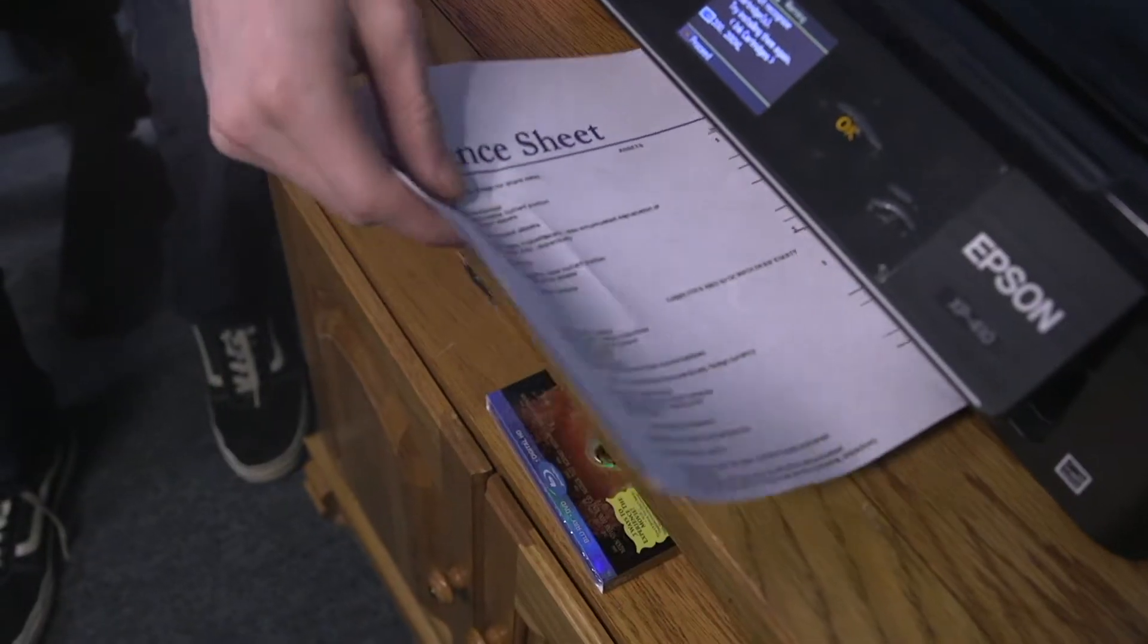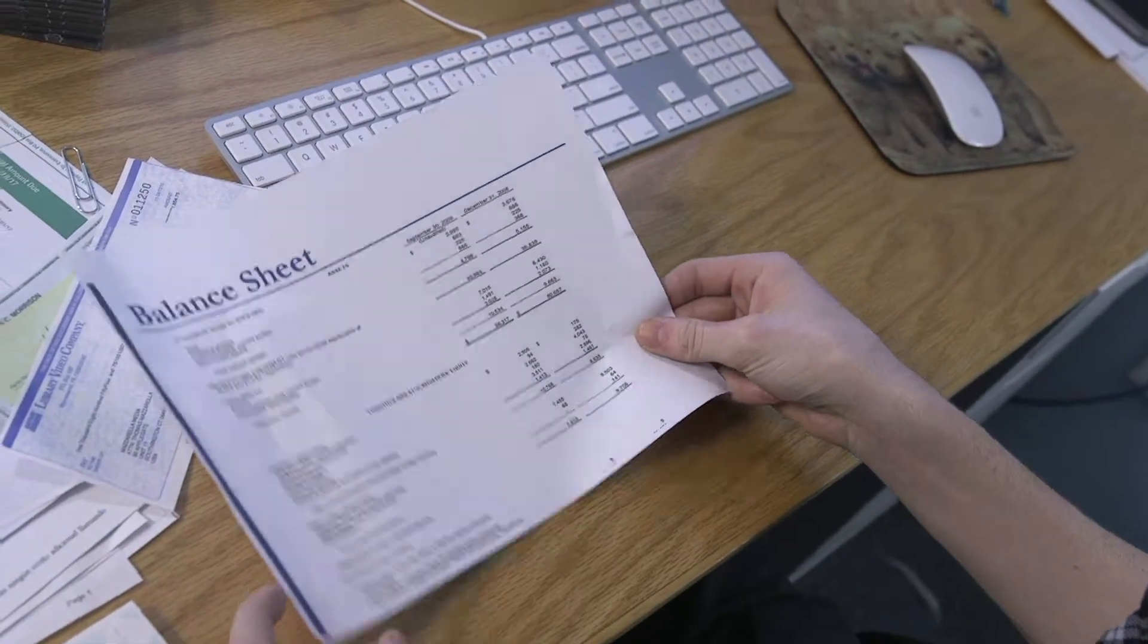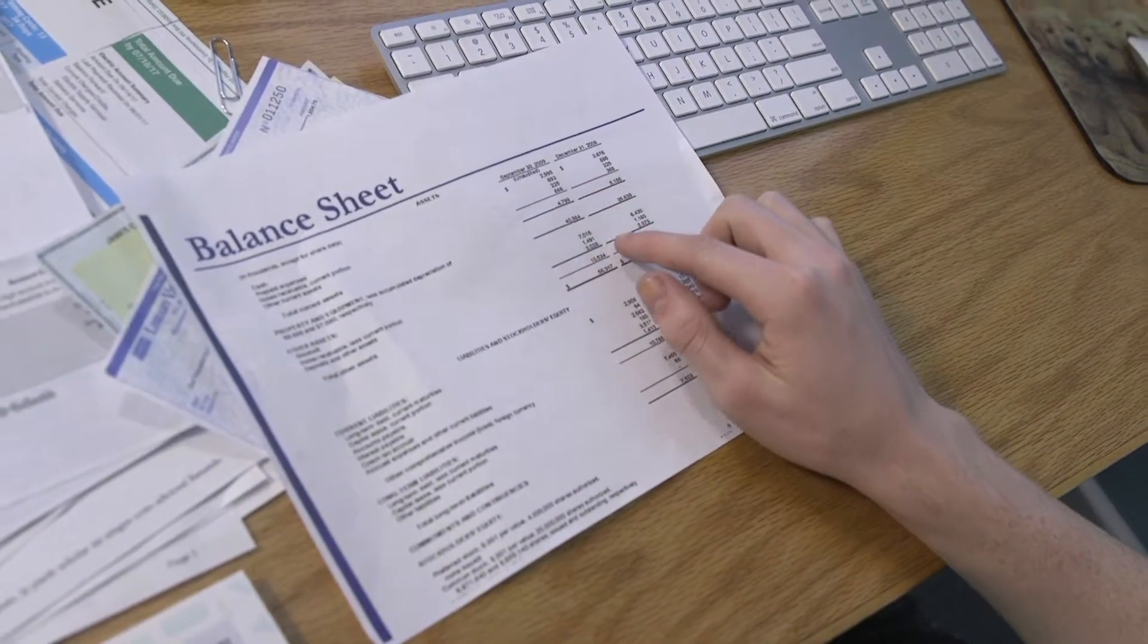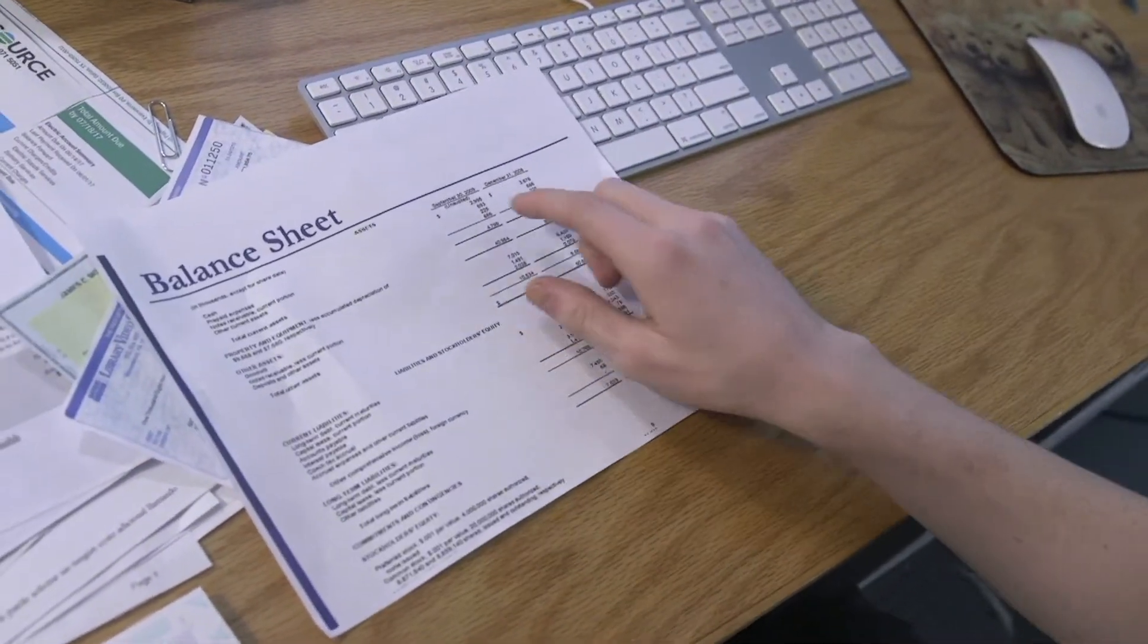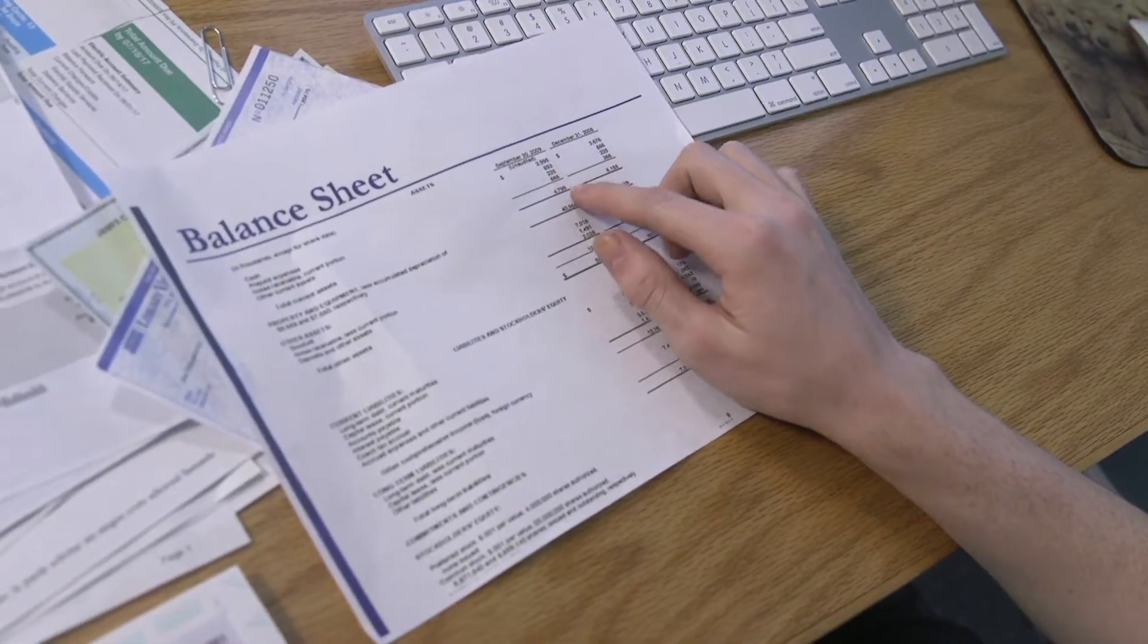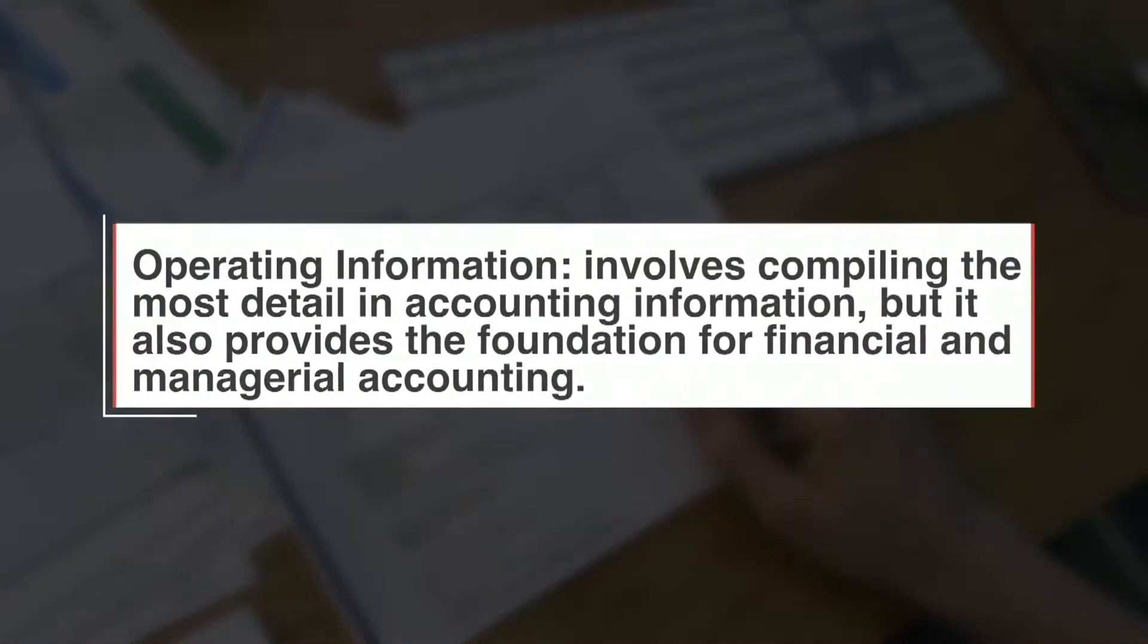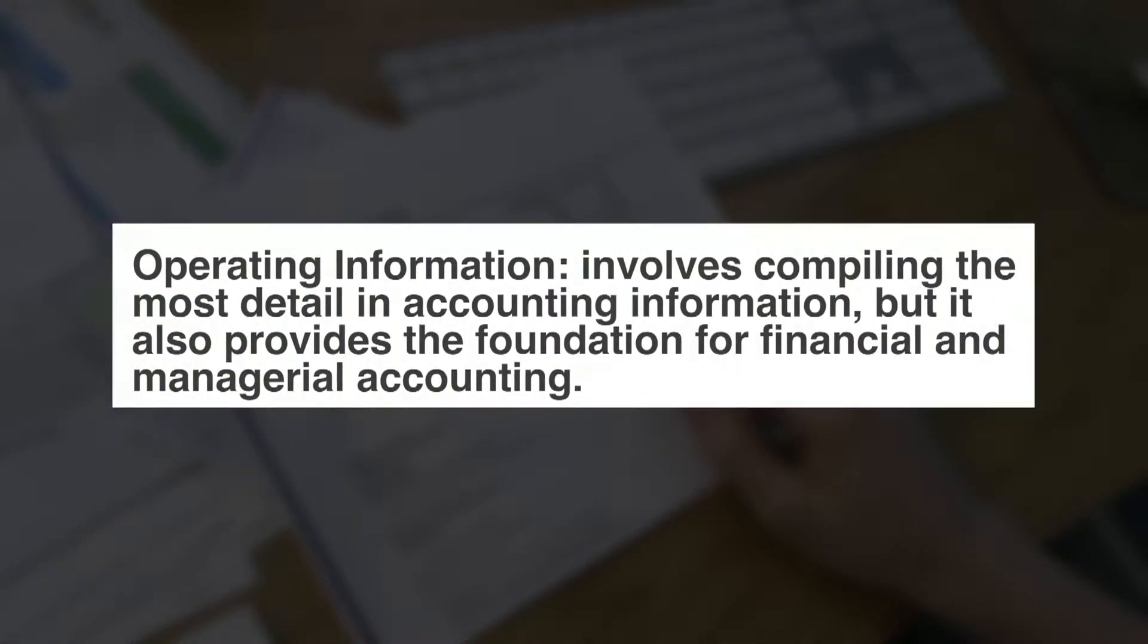The basic financial information Anthony is compiling and recording is operating information, one of the three main categories of accounting. By simply keeping track of how much money comes in and how much money goes out, Anthony is able to understand and analyze his finances, and therefore make better decisions for his business. Operating information involves compiling the most detail in accounting information, but it also provides the foundation for financial and managerial accounting.